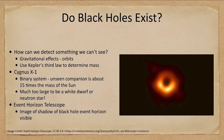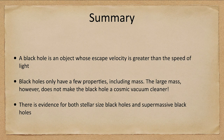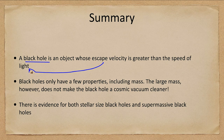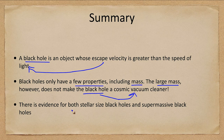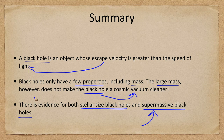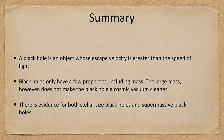Let's finish up with our summary. A black hole is defined as an object whose escape velocity is greater than the speed of light. Black holes have only a few properties, which include mass, but even that large mass does not make the black hole a cosmic vacuum cleaner. There is evidence for both stellar-sized black holes and supermassive black holes, and we will continue when we get to galaxies to look at these very large black holes that exist at the center of galaxies. That concludes this lecture on black holes.